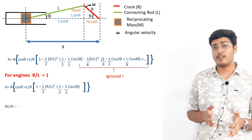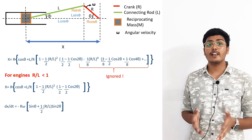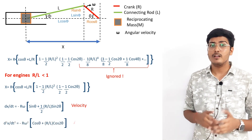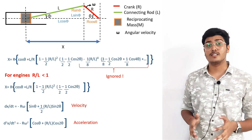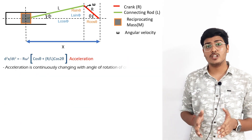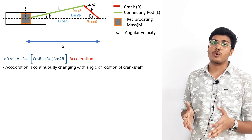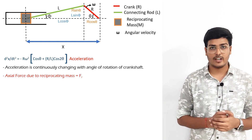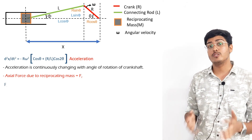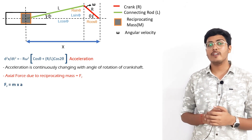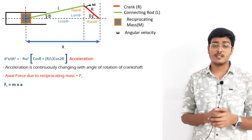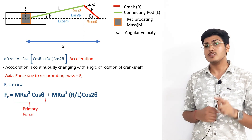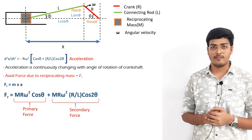If we differentiate this value of x with respect to time we get the velocity of the piston, and if we double-differentiate with respect to time we get the acceleration. The acceleration is continuously changing with the angle of rotation of the crankshaft. The reciprocating forces arise due to the change in acceleration of the piston, piston pin, and the portion of the connecting rod. Since force = mass × acceleration, the axial force due to reciprocating masses is given by the following equation. The first term is called the primary force and the second term is called the secondary force.